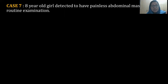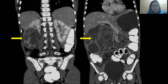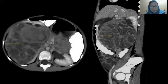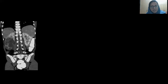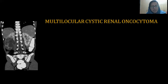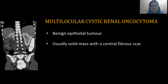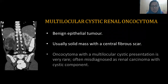Next case: An eight-year-old girl detected to have a painless abdominal mass on routine examination. We see a multiloculated cystic large mass involving the lower pole of the right kidney, with the fibrous scar showing enhancement on post-contrast. The biopsy came as multilocular cystic renal oncocytoma. Oncocytomas usually present as a solid mass with a central fibrous scar, but such a cystic presentation is very rare.